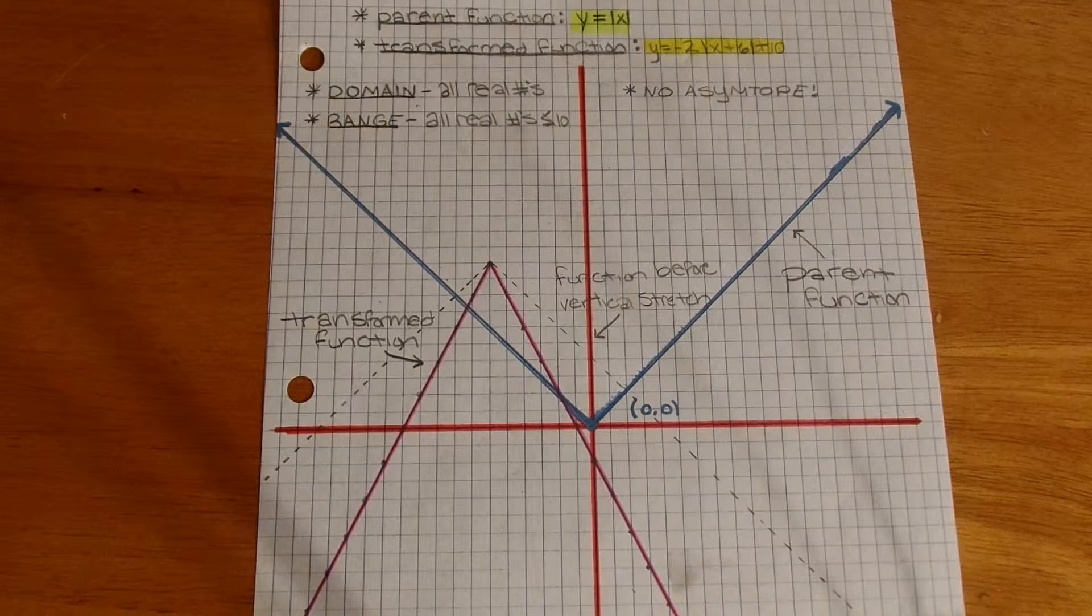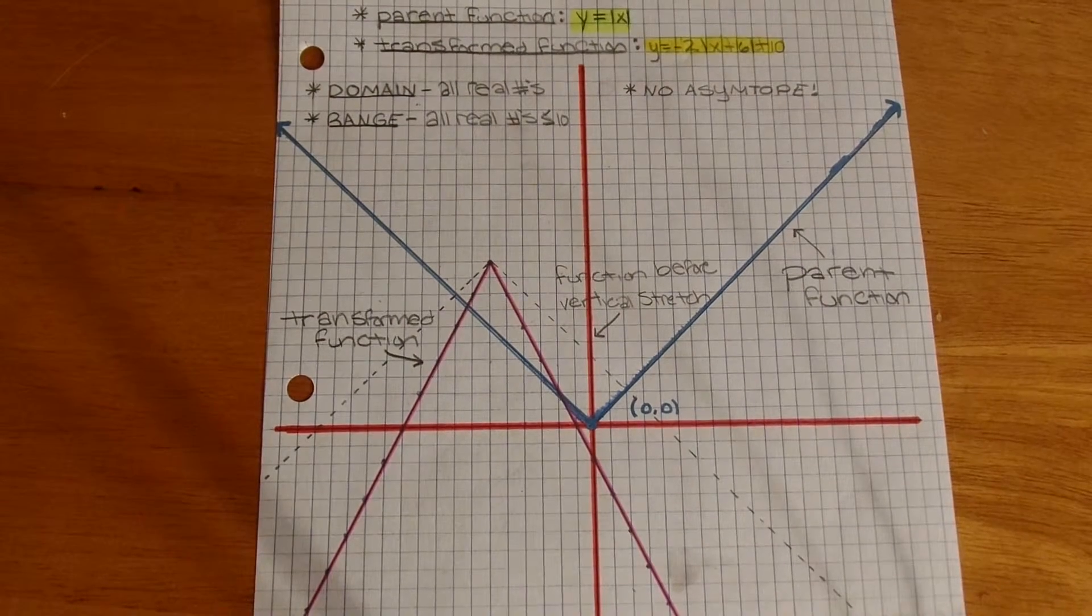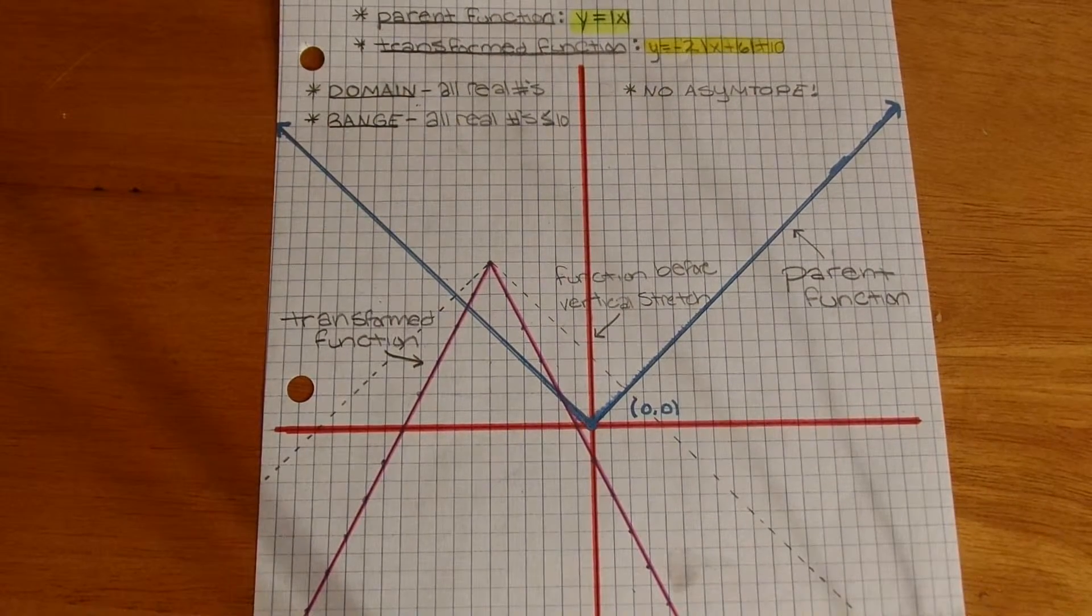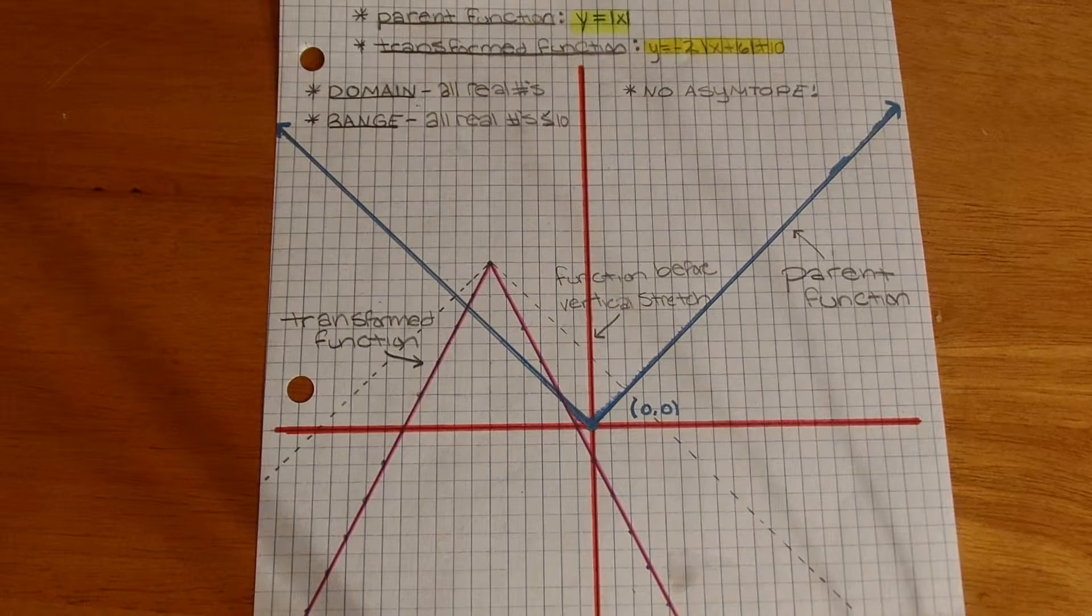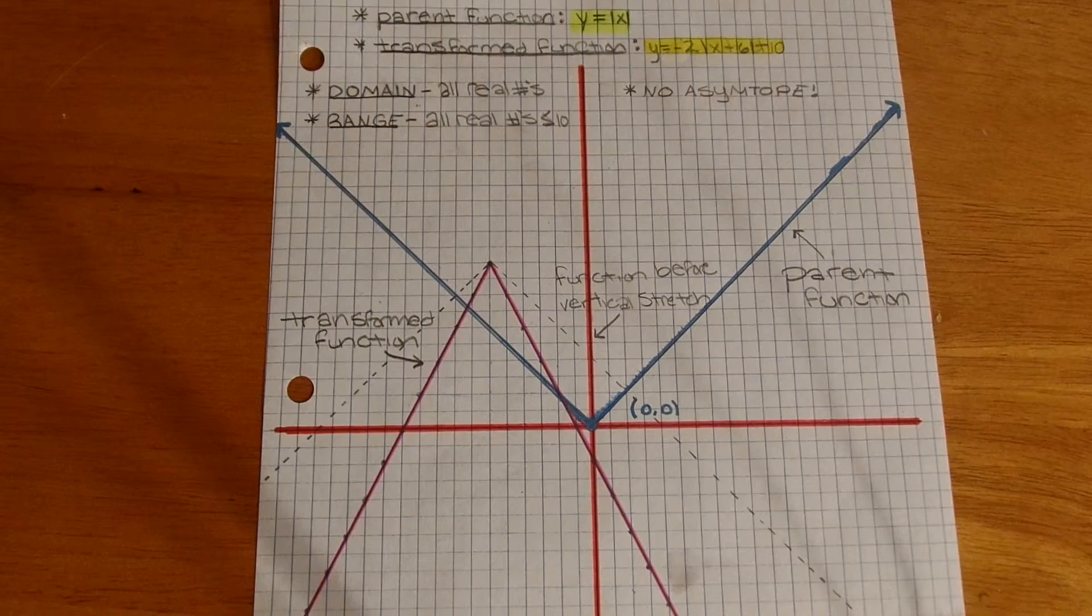Since the number next to the x is a positive 6, you'd move left 6, and since the number on the end is a plus 10, you'd be moving the function up 10 units.